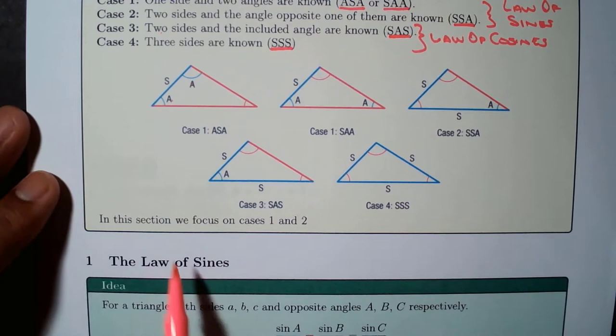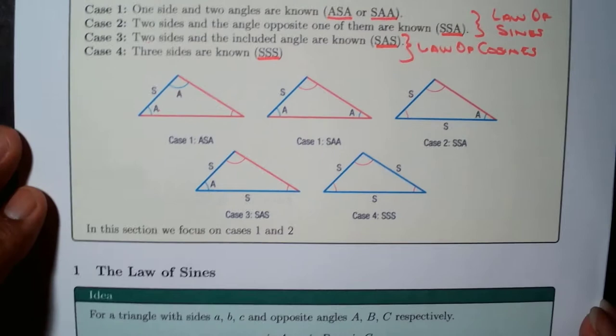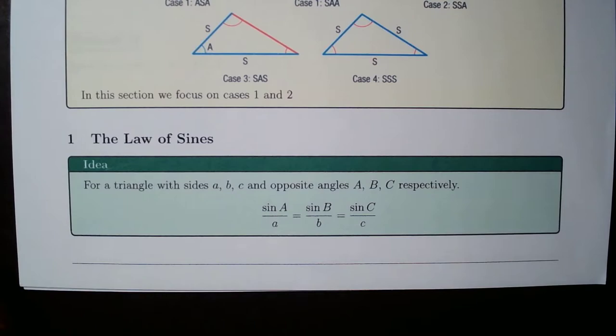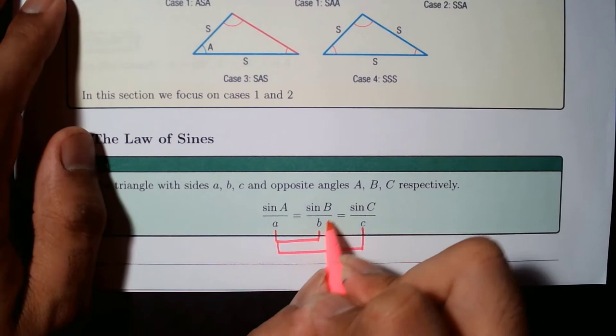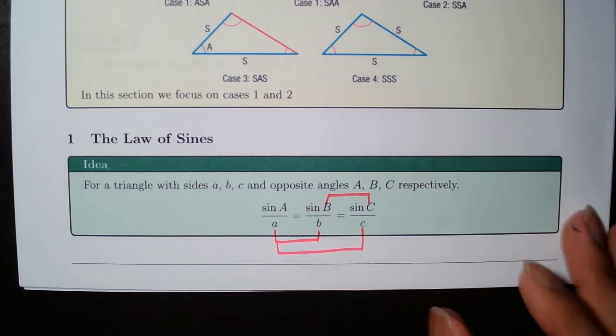In this section, we focus on cases one and two for the Law of Sines. The formula has three parts to the equation, but really this gives rise to three formulas when we combine A with B, A with C, and B with C. So really these are three formulas.